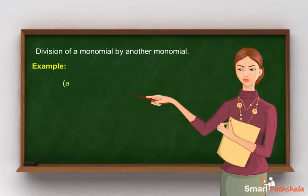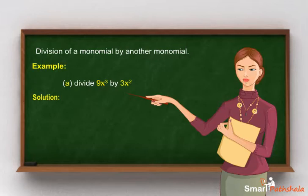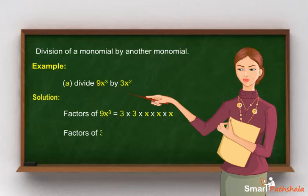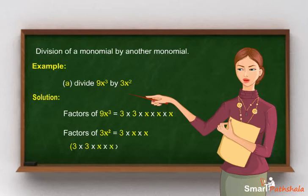Divide 9x cubed by 3x squared. Solution: we will find the factors of both numerator and denominator. Factors of 9x cubed is equal to 3 × 3 × x × x × x. Factors of 3x squared is equal to 3 × x × x. Now divide the factors and cancel the common factors: 3 × 3 × x × x × x divided by 3 × x × x is equal to 3x.